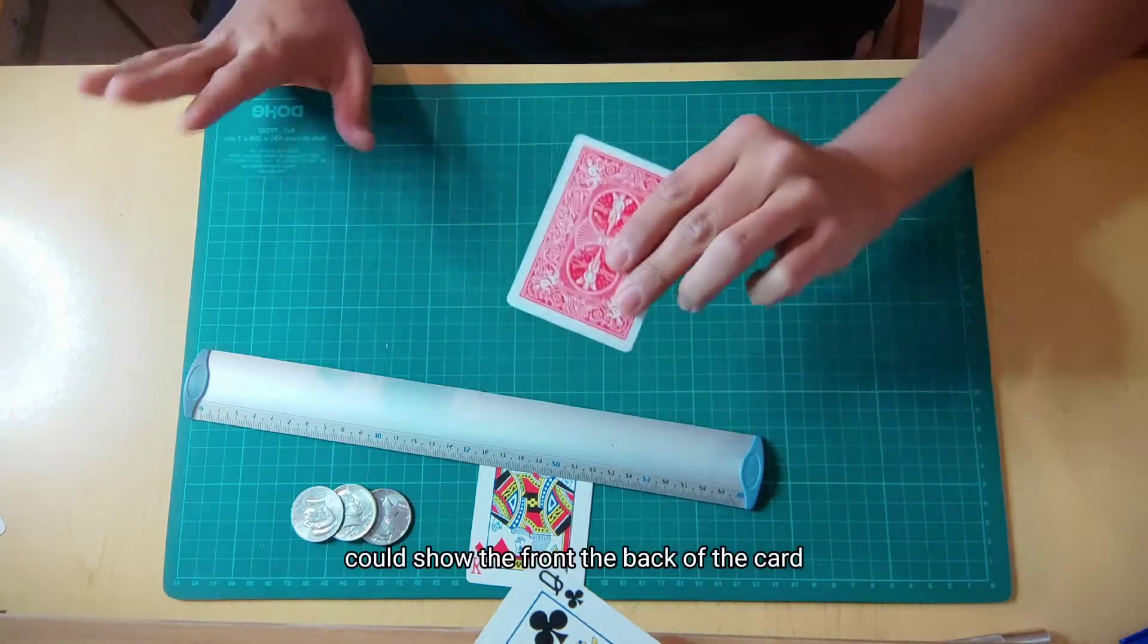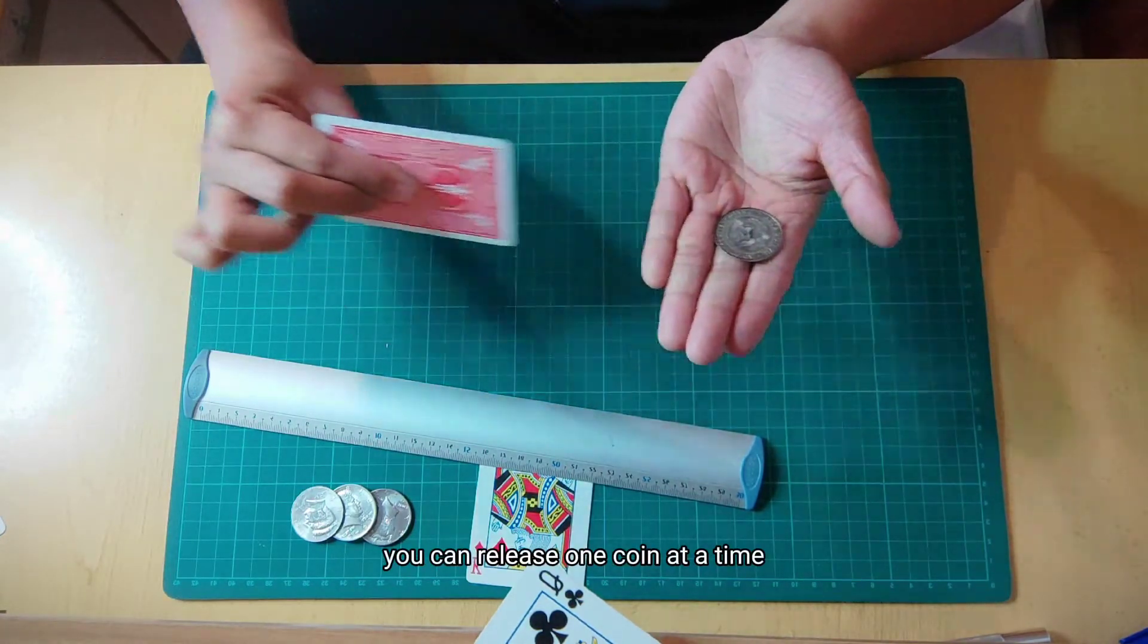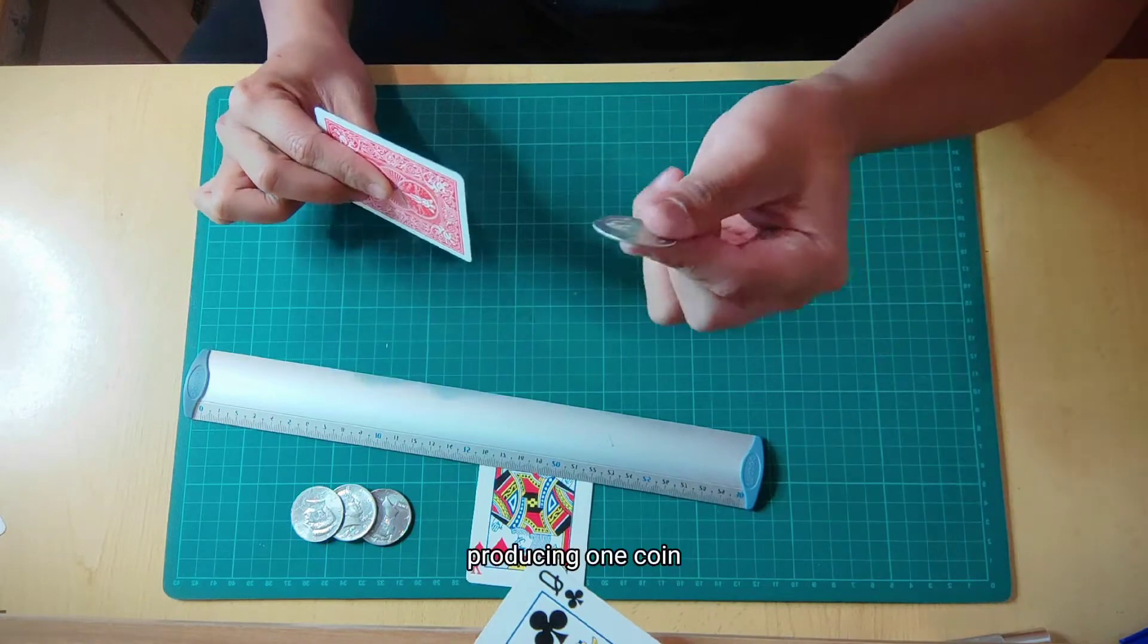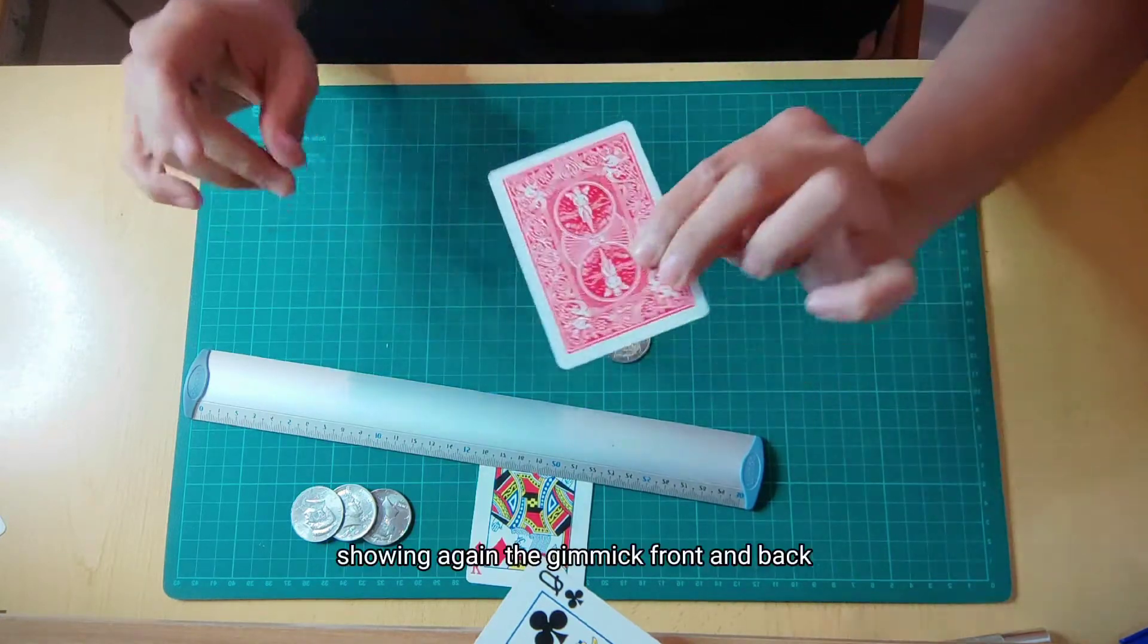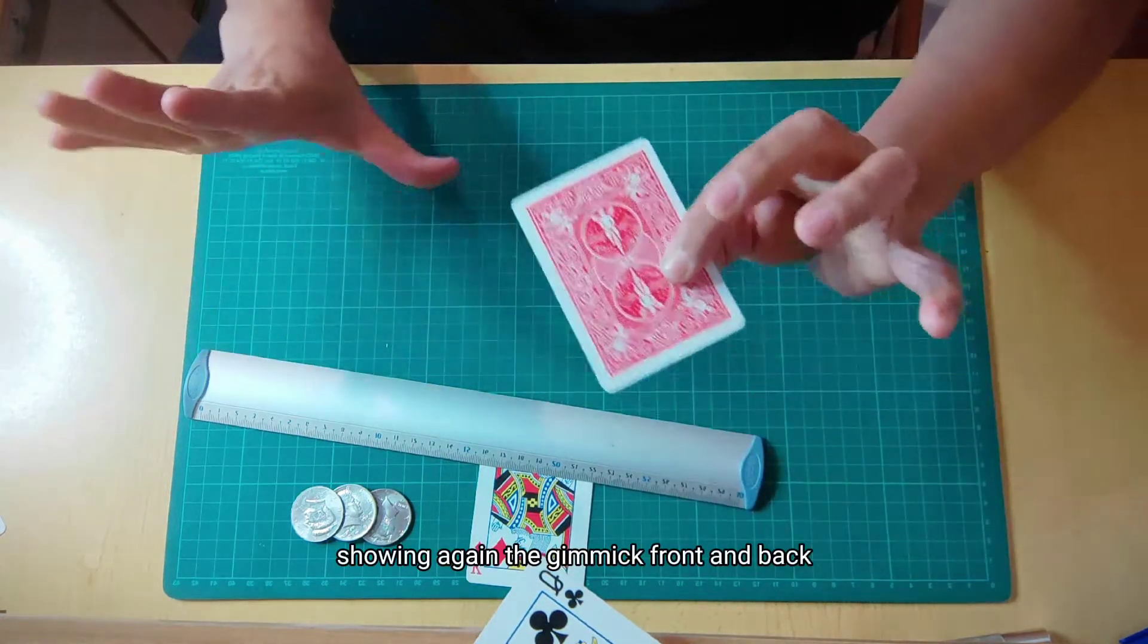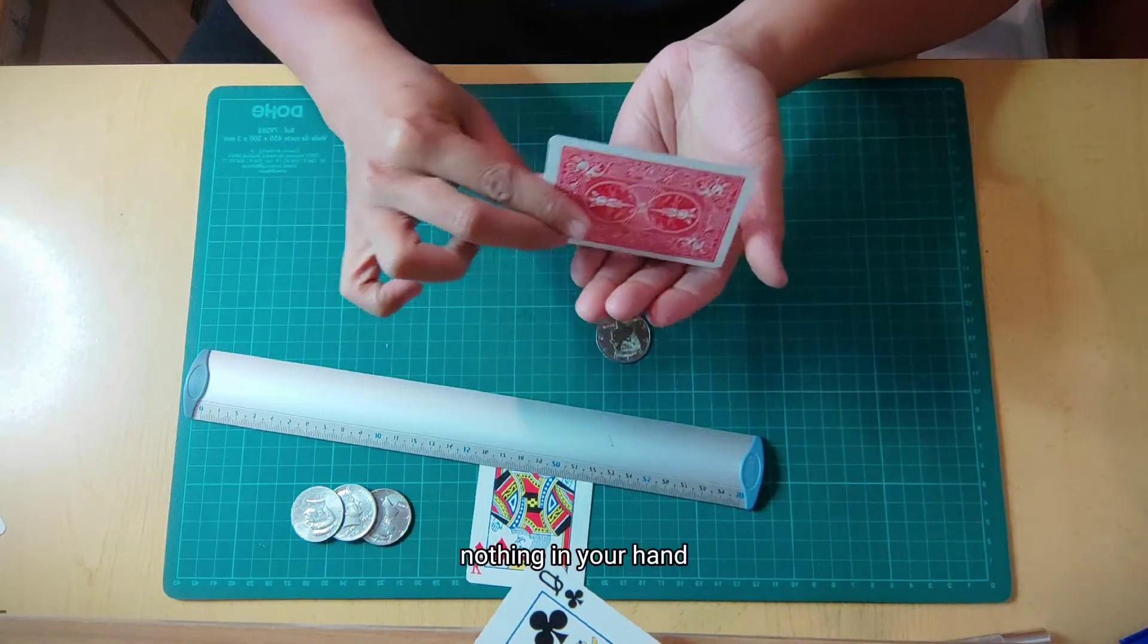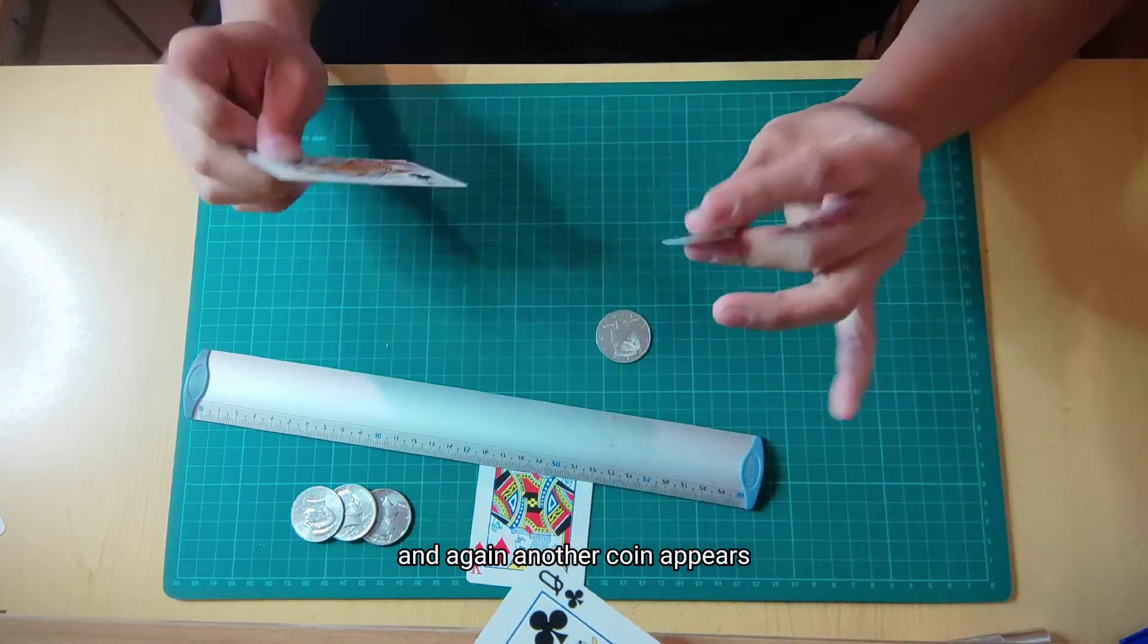You can show the front and the back of the cards. You can release one coin at a time, producing one coin. Showing again the gimmick, front and back. Nothing in your hand. And again, another coin appears.